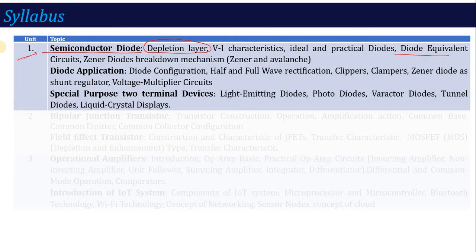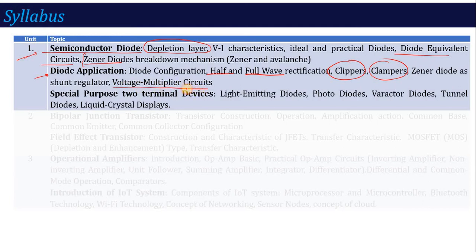We will talk about diode equivalent circuits — when it comes to a diode circuit, whether the diode is on or off. From diode equivalent circuits, we will come to the diode application part, where you will study diode-related circuits like half wave rectifier, full wave rectification, clipper circuit, clamper circuit, and voltage multiplier circuits. In all these circuits, you will understand how the input is processed — rectified, clipped, clamped, or voltage increased.